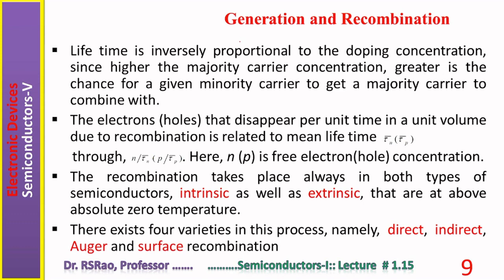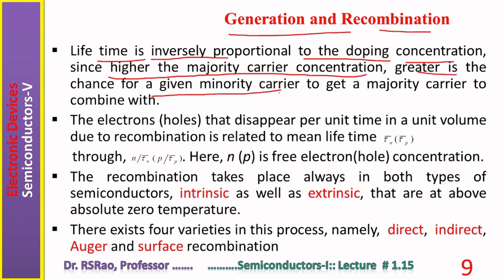Lifetime is inversely proportional to the doping concentration, since higher majority carrier concentration means a greater chance for a given minority carrier to encounter a majority carrier and recombine. Lifetime is the time that exists between generation and recombination of a given carrier — from when a free electron comes into being until it encounters a hole and recombines.